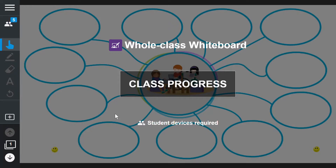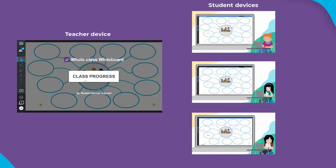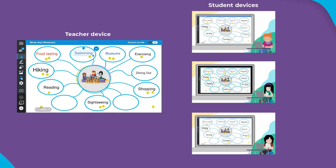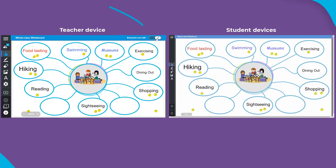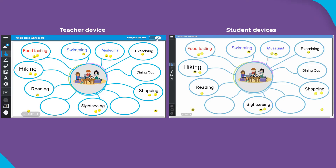Once the lesson is started or shared, students can select Resume to make edits to the Activity page, and I can select Class Progress to review the work in real-time. I can also pause and unpause the activity using the Everyone Can Edit toggle. When the activity is paused, the editing tools on student devices will no longer be visible until the activity is resumed by the teacher. By default, the toggle for everyone to edit is on.